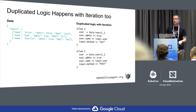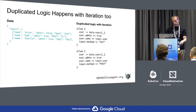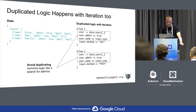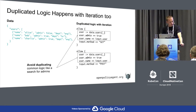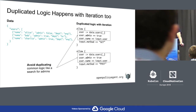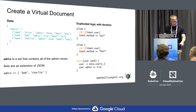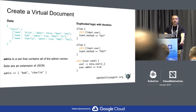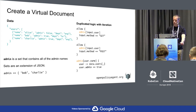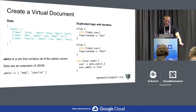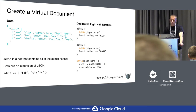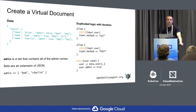Just because we're using iteration doesn't mean we no longer have the problem of duplicated logic. In this example, we've got logic duplicated that's searching for administrators. So we want to avoid duplicating that logic. Because iteration requires some special constructs, we have special constructs for eliminating duplicate logic when we have iteration. We've pulled out the common logic and created what we're calling a virtual document that defines a set of administrators. This particular search iterates over all the users and finds all those that are administrators, storing the result in the 'admin' variable. So 'admin' is the set containing Bob and Charlie. Sets are an extension to JSON — when rendered and returned, they look like arrays.